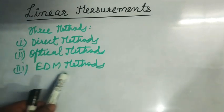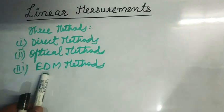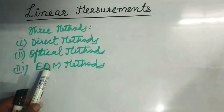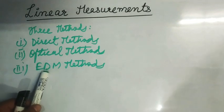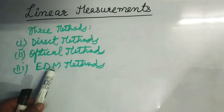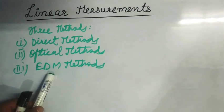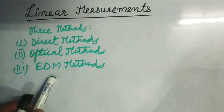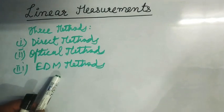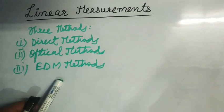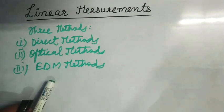The third method is EDM — Electronic Distance Measuring instruments. These are of two types: electro-optical instruments, which use light waves for measurement of distances, such as geodimeter, micrometer, etc.; and microwave instruments, which use radio waves for measurement of distances, such as distameter, microchain, etc.